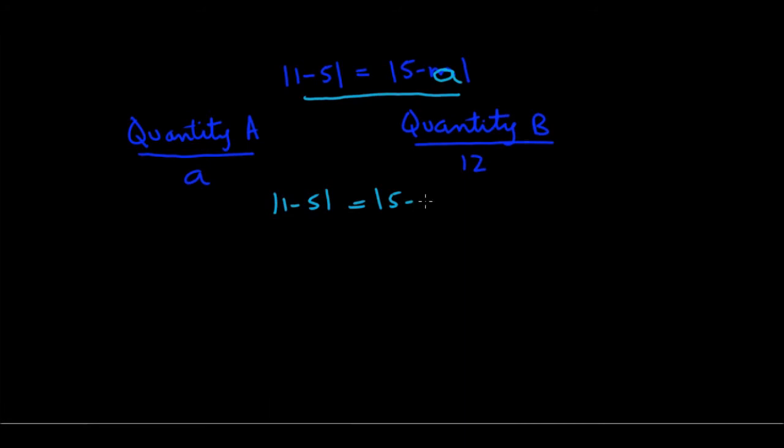And quantity B has a 12. So let's take this equation: 1 minus 5 equals 5 minus A. Let's solve the left side which is pretty straightforward. I have 1 minus 5 is negative 4. Negative 4 will give me a positive 4 and comes out of the absolute value bars. So here is my equation a bit simplified.